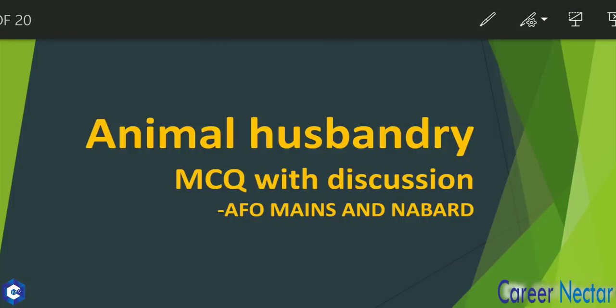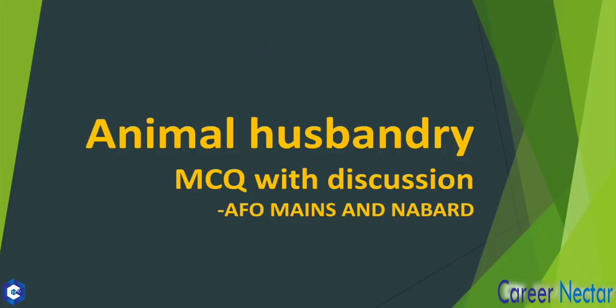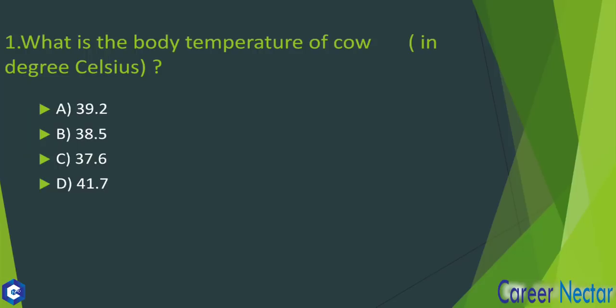Today we will discuss Animal Husbandry MCQs with discussion for AFO Mains and NABARD. So let's see what our first question is: What is the body temperature of a cow in degrees Celsius? Options given are: 39.2, 38.5, 37.6, or 41.7.